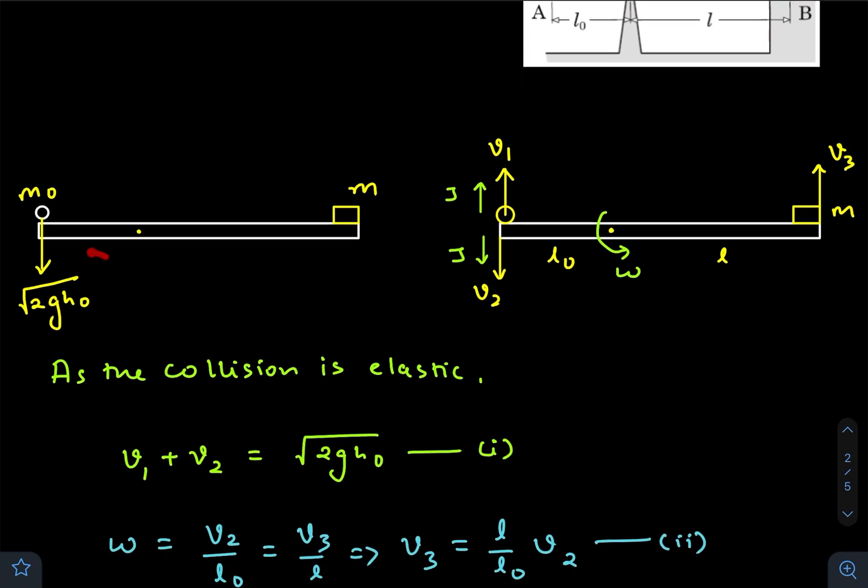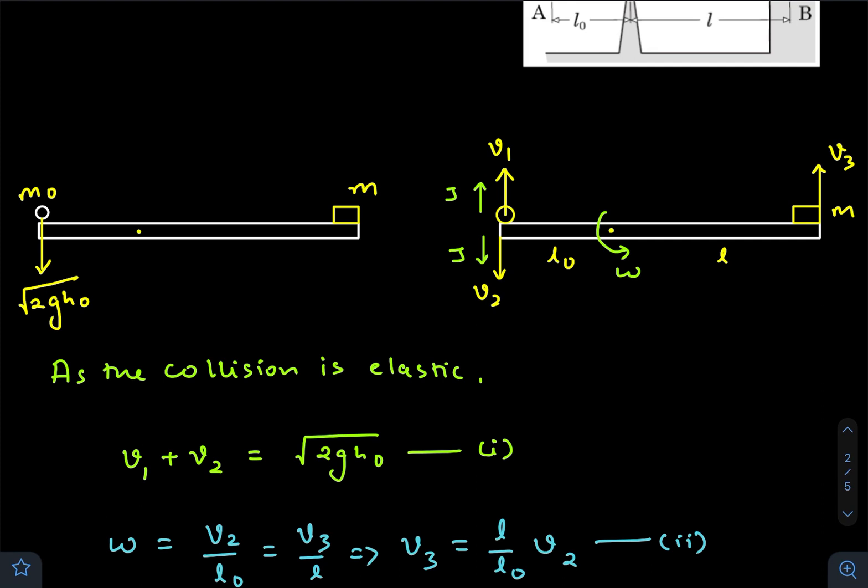Just after collision, we've assumed that the velocity of mass m₀ is v₁, and the end of the plank will gain velocity v₂. As a result, the other end of the plank will gain velocity v₃. Of course, it will have a common angular velocity ω.